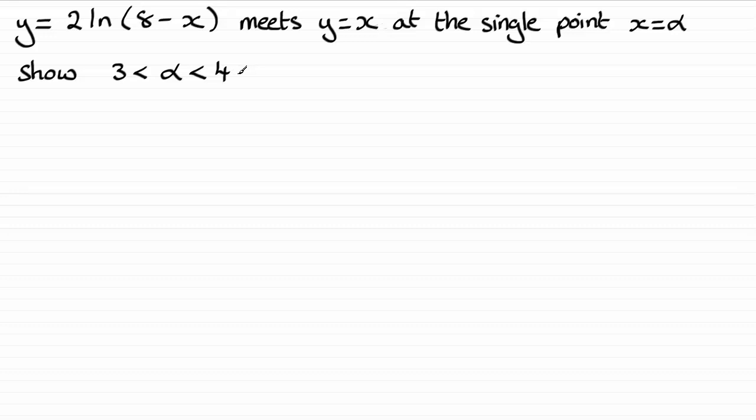In order to do this, the method I'm going to be using is a change in sign method. What I need to do is state that at the point of intersection, we know that the y values are going to be equal.